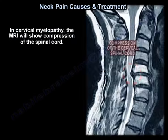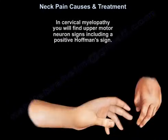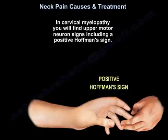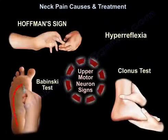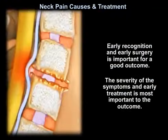In cervical myelopathy, you will find upper motor neuron signs, including a positive Hoffmann sign. Other upper motor neuron signs include hyperreflexia, a positive Babinski test, and Clonus. Early recognition and early surgery are important for a good outcome; the severity of symptoms and early treatment are most important to the outcome.